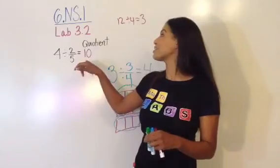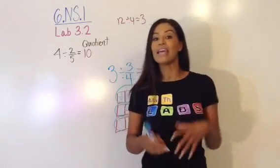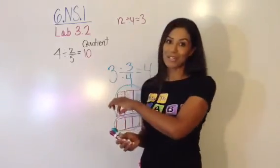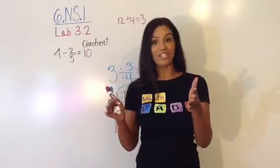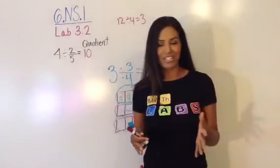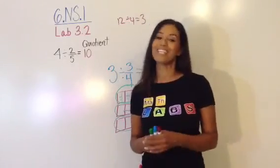This has been lab 3.2 of 6.NS.1. Tomorrow, we're going to look at a fraction that goes into a whole number but there's a remainder. And then we're going to look at a fraction divided by a fraction. So both the divisor and the dividend will both be fractions, and we'll look at that model and test that out as well. Thanks for watching.